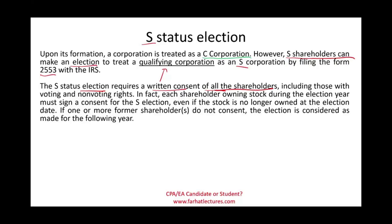Every shareholder who owned stock during the election year must sign for the S election, even if they no longer own stock at the election date. If one or more owners do not consent, the election is considered made for the following year. This matters because a former shareholder who doesn't want flow-through income for a particular year can block the election for that year.